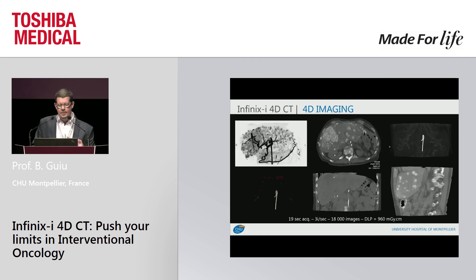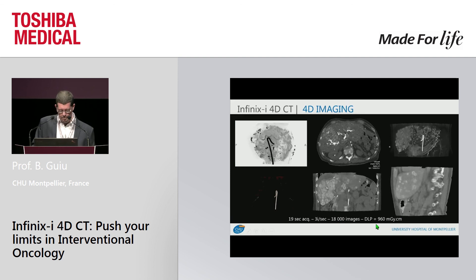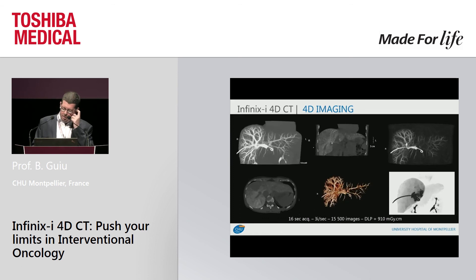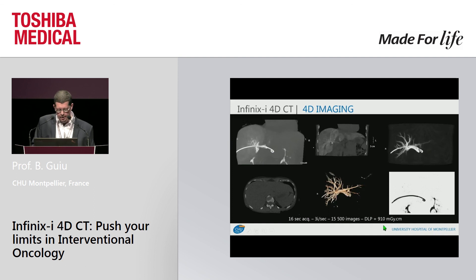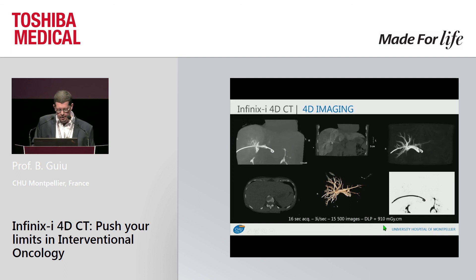You have perfusion information and the arteries feeding the tumor — many, many pieces of information that could completely change our practice. This acquisition was not yet optimized in terms of dose delivery, but 19 seconds acquisition, 3 images per second, 18,000 images, and the DLP is really acceptable. Another example from the portal vein embolization patient shown previously — again, you can see anything you want with such technology, with a huge number of images but acceptable and optimizable radiation exposure.